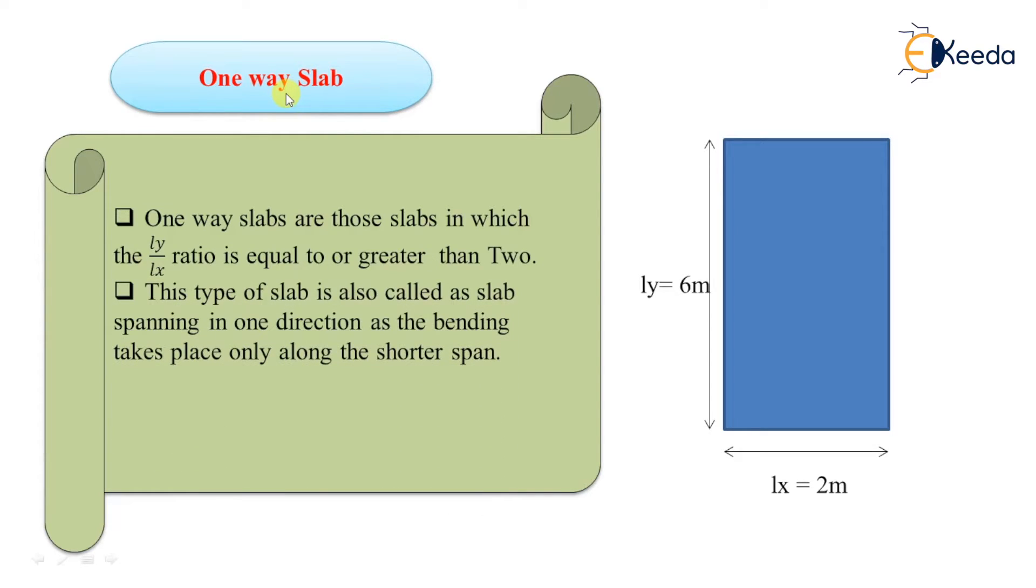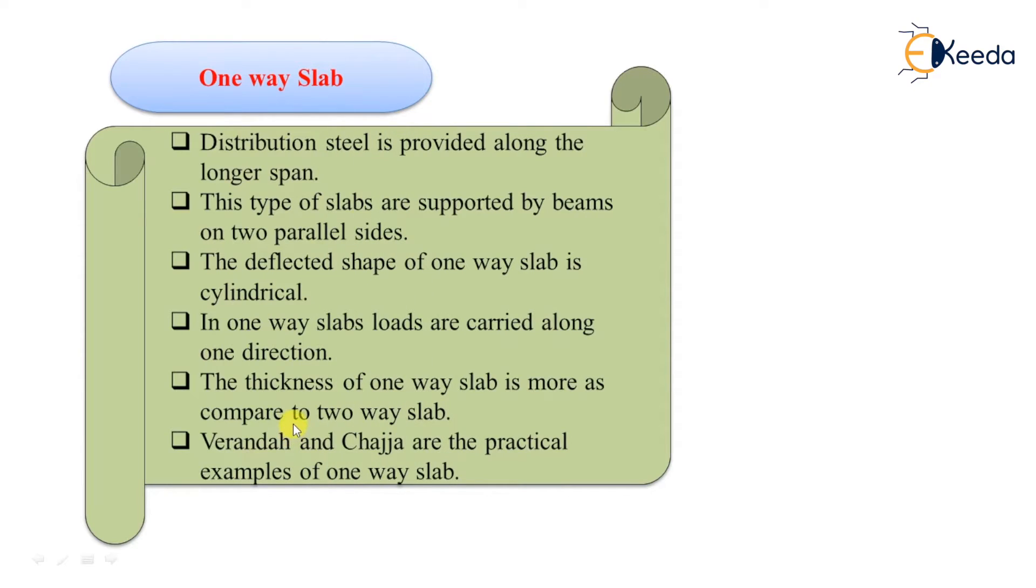As bending takes place only along the shorter span, this slab is also called as slab spanning in one direction. Therefore, to resist the bending, the main reinforcements are provided along the shorter span and distribution reinforcements are provided in the longer span.